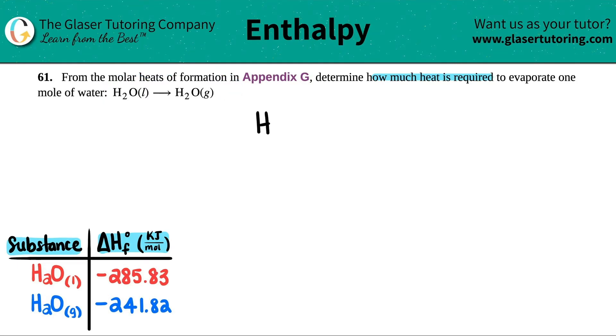So in this case I'm just going to rewrite this. They want us to find the heat of formation basically by turning liquid water into steam, which is H2O gas. Now I already went to Appendix G and I wrote down the delta H values that we're going to be using here.